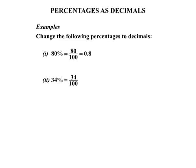34%. Well, that means 34 over 100. And using the calculator, press 34 divided by 100. Pressing equals, we get 0.34.